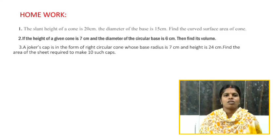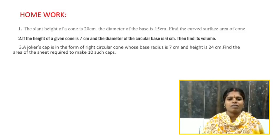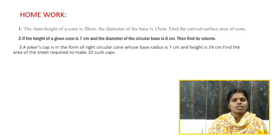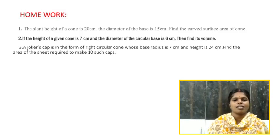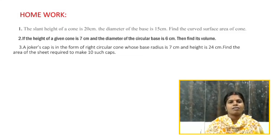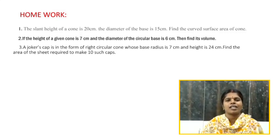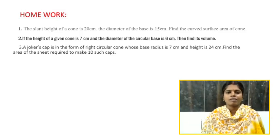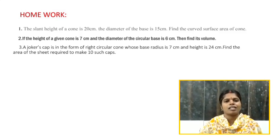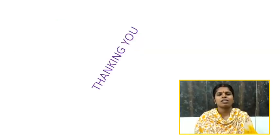Children, this is your homework time. First question: the slant height of a cone is 20 centimetres and the diameter of the base is 15 centimetres — find the curved surface area. Second question: if the height of a given cone is 7 centimetres and the diameter of the circular base is 6 centimetres, then find its volume. Third question: a joker's cap in the form of a right circular cone whose base radius is 7 centimetres and height is 24 centimetres — find the area of the sheet required to make 10 such caps. Thanks for giving this opportunity to me.